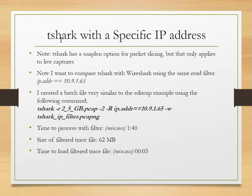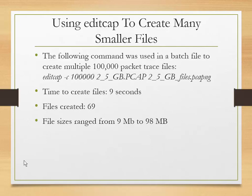You can do the same thing with TShark from the command line. The syntax is: 'tshark -r [input file] -2 -R [read filter] -w [output file]'. The -2 flag enables a two-pass analysis and -R is the read filter. It took 1 minute 40 seconds to process, produced a 62 meg filtered trace file, and loading that filtered file took only 3 seconds — very reasonable for use in the field.